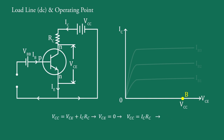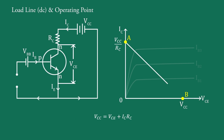When VCE equals 0, then VCC equals IC·RC, and therefore IC equals VCC divided by RC. This gives another point on the IC axis as point A, where IC equals VCC/RC and VCE equals 0. By joining these two points, the DC load line is obtained. The load line is the locus of all pairs of IC and VCE values which can exist for given values of VCC and RC.